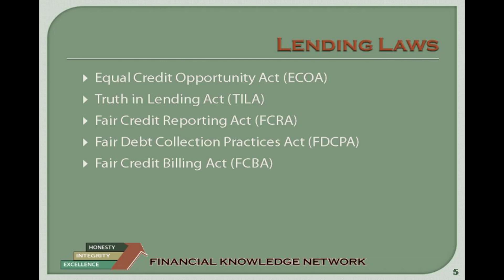For example, you cannot be denied a loan because you have filed a complaint against the bank. During the loan application process, ECOA restricts the lender from requesting certain information. In general, the lender may not ask for information about a spouse or former spouse unless your spouse is applying with you. If you are jointly applying or if the loan is secured, the lender may ask your marital status, but may only use the terms married, unmarried, and separated. If you do not qualify on your own, lenders may require a co-signer or guarantor, but may not require that it be your spouse.